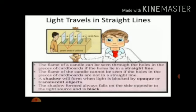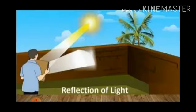The flame of a candle can be seen through the holes in the pieces of cardboards if the holes lie in a straight line. The flame of the candle cannot be seen if the holes in the pieces of cardboard are not in a straight line. A shadow will form when light is blocked by opaque or translucent objects.